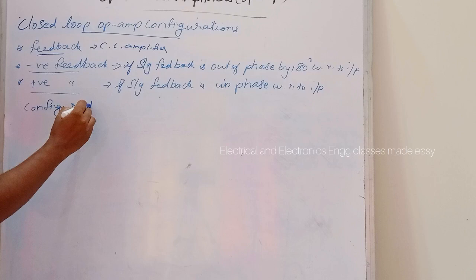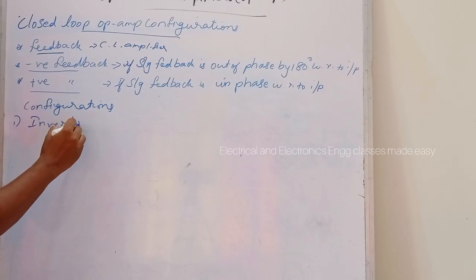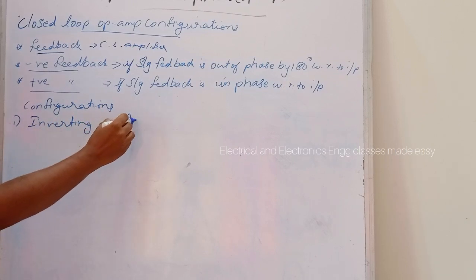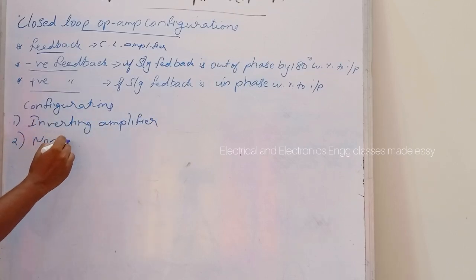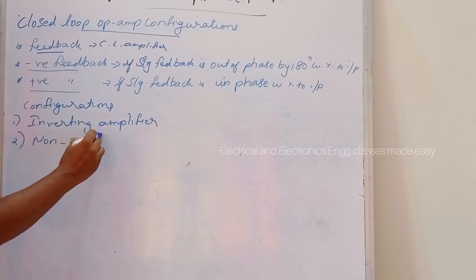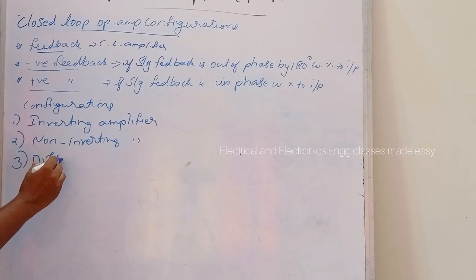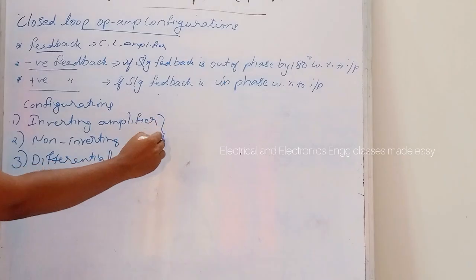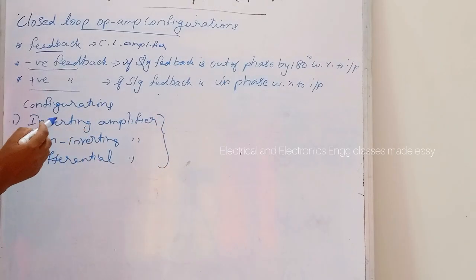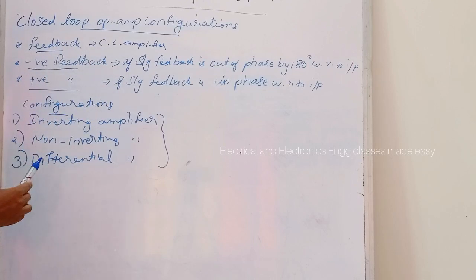There are three main configurations of op-amps: inverting amplifier, non-inverting amplifier, and differential amplifier. These three are the main closed-loop configurations of op-amps.